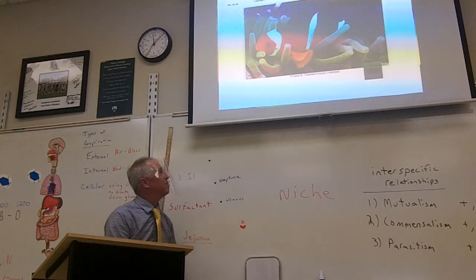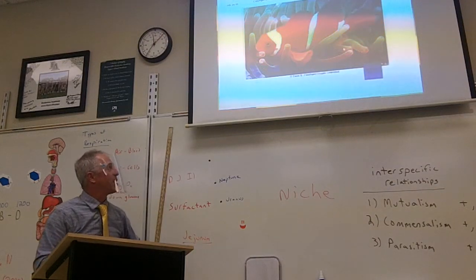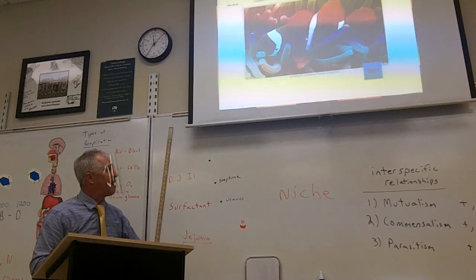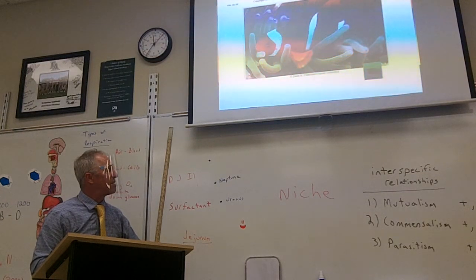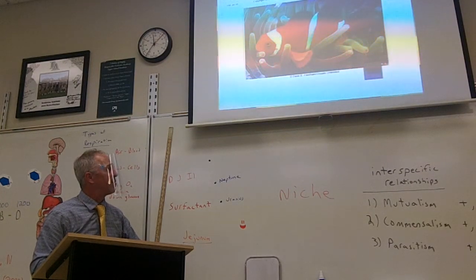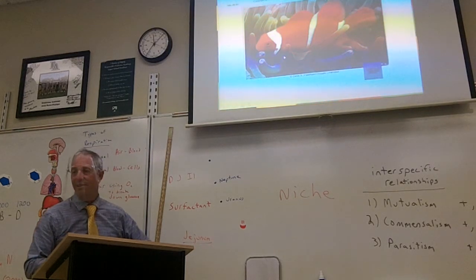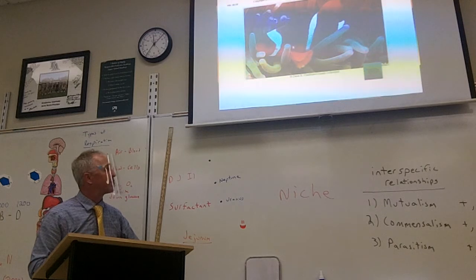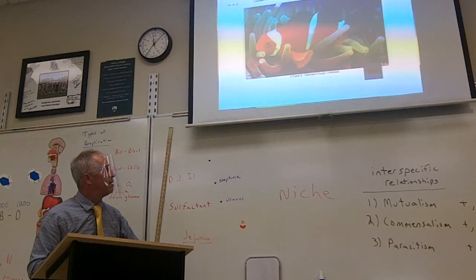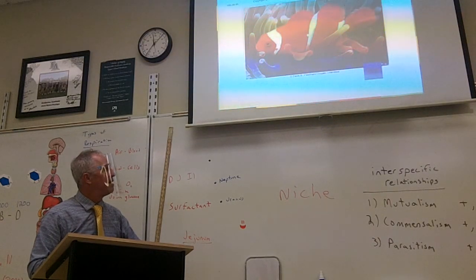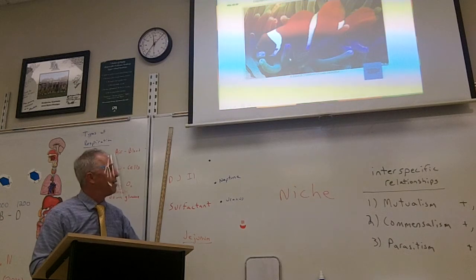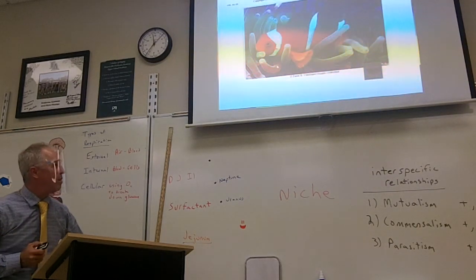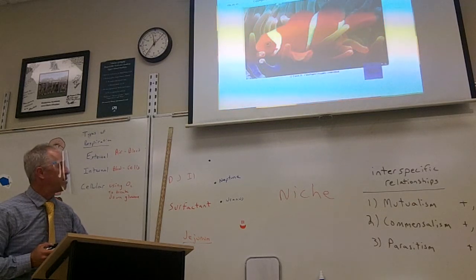Here's another example of commensalism - the clownfish in the sea anemone. The clownfish benefits because it gets a place to live where nothing will come after it because the sea anemone has a sting. Did y'all know that? Clownfish is immune to the sting. But the sea anemone doesn't help or hurt, so that's a commensalistic relationship.